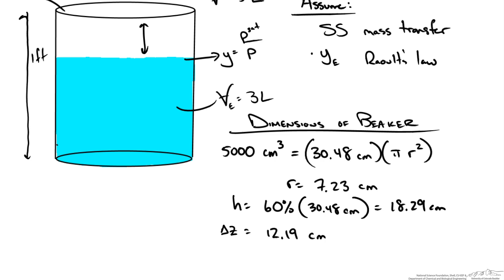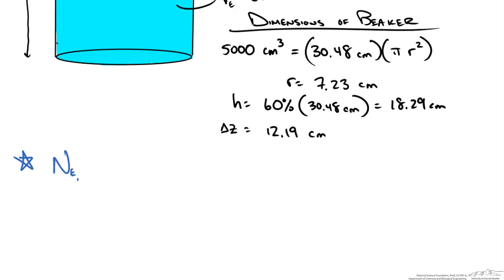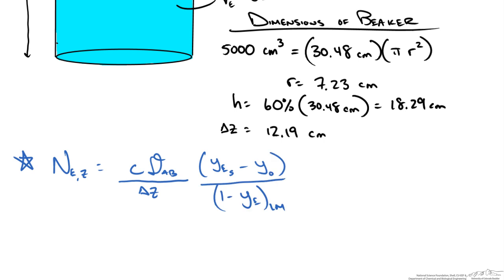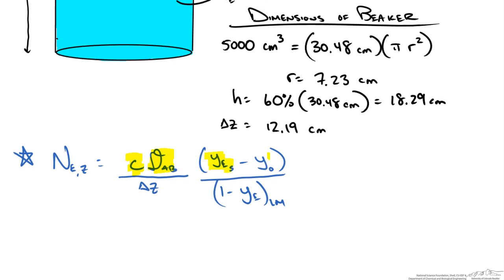Since we are diffusing ether through a stagnant layer of air, we use unimolecular diffusion and the appropriate flux equation. The flux of ether in the z direction equals the concentration of the system times the diffusivity of ether in air, divided by delta z, times the mole fraction of ether at the liquid surface minus that at the top of the container, all over the log mean of one minus the mole fraction of ether. We can calculate concentration using the ideal gas law, mole fraction using Raoult's law, and the log mean accordingly — so we can now calculate the flux.